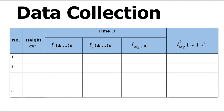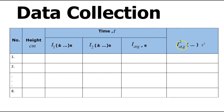This is the table you are going to use to record the data in the experiment. When you write the variable name height, you must include the unit of the variable. The unit for height is centimeter, the unit for time is second, and the unit for time squared is second squared. The plus-minus section is left blank so that you can input the sensitivity of your measuring instrument. For each height, you are going to repeat the experiment for falling time twice and then find the average, and then square the average to get t².